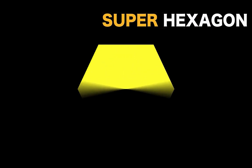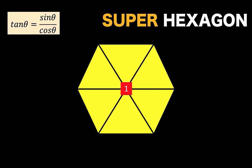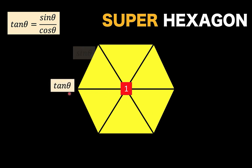A super hexagon is simply a hexagon divided into six triangles. At the middle of the hexagon is the number one, and there is only one formula you have to remember: the tangent of angle theta equals sine theta over cosine theta. We position these three trigonometric functions in the hexagon — tangent theta, sine theta, and cosine theta.